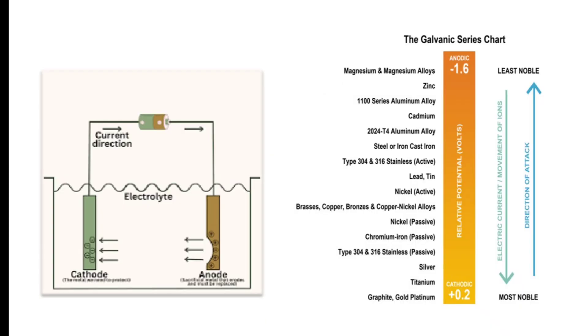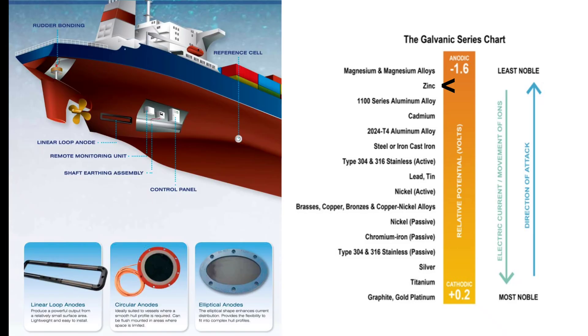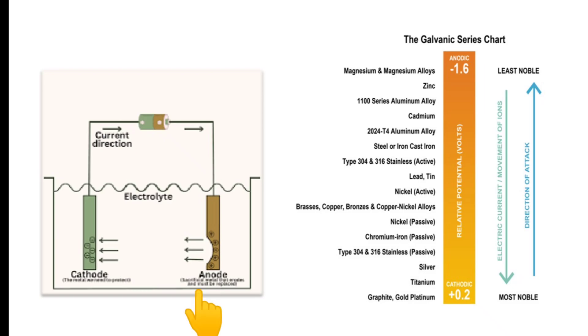Sacrificial anode: With the galvanic series, we know that the more active metal (anode) can corrode in the place of less active metal (cathode). By coupling the ship structure with a more active metal such as zinc or magnesium, a galvanic cell is created in which the active metal working as anode provides a flux of electrons to the structure which then becomes the cathode. The cathode is protected and the anode progressively gets dissolved, which is hence called sacrificial anode.